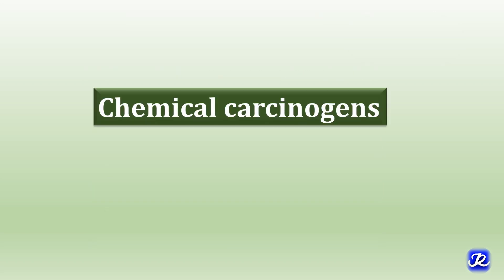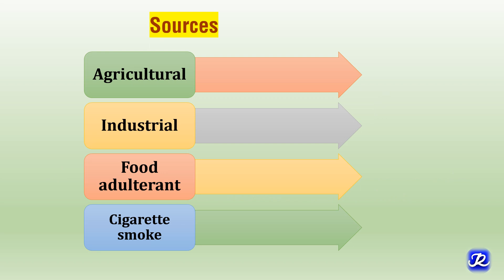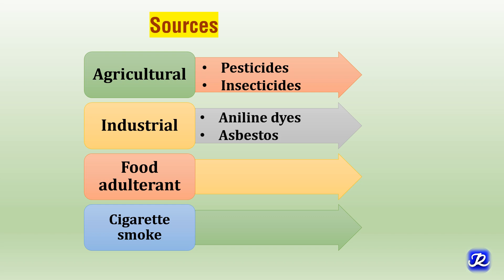Let's first study about chemical carcinogens. It is estimated that almost 80 percent of human cancers are caused by chemical carcinogens present in nature. The sources of chemical carcinogens include pesticides and insecticides used in agriculture, aniline dyes, asbestos used in industries, aflatoxin which is a food adulterant, and benzopyrene present in cigarette smoke.